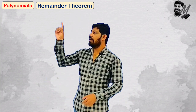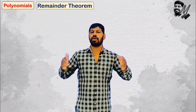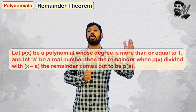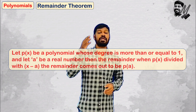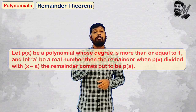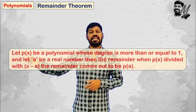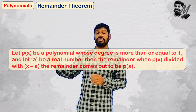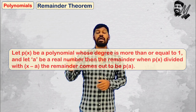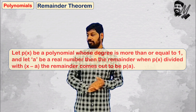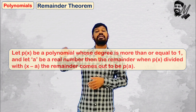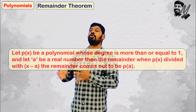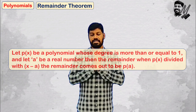The degree of R of x should be less than the degree of G of x — this is the most important observation. Coming to the Remainder Theorem statement: let P of x be a polynomial of degree more than or equal to 1. If P of x is divided by x minus a, then the remainder is P of a.